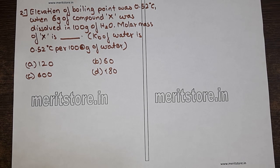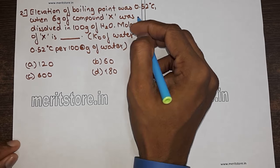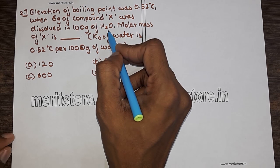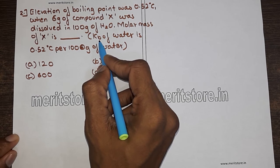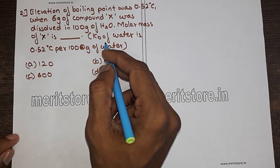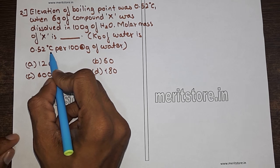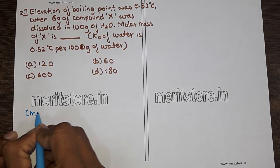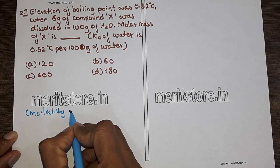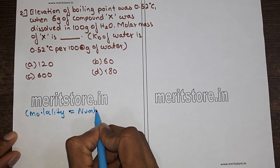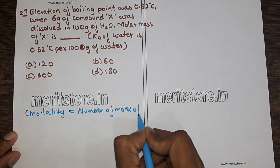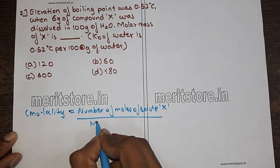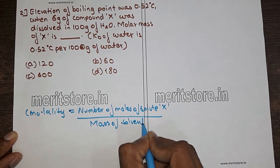Question 2: Elevation of boiling point was 0.52°C when 6 grams of compound X was dissolved in 100 grams of H₂O. Find the molar mass of X, given that Kb (molar elevation constant for water) is 0.52°C per 1000 g of water. We use the molality formula: molality = moles of solute / mass of solvent in kg.